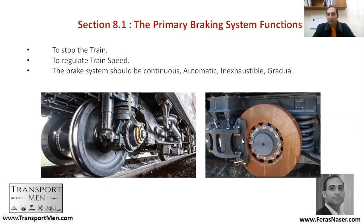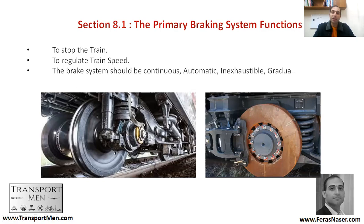This is how you would apply the brake. The disc comes in behind this cylinder, and when the brake is released it will be applied on the wheel, not on the bearing. This is the axle bearing where the wheel is attached. The brake system should be continuous, automatic, inexhaustible, and gradual. You should apply the brake continuously; it should be automatic, not exhaustible, and it should be gradual — applied on a gradual basis.